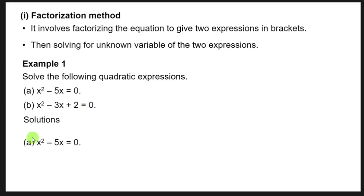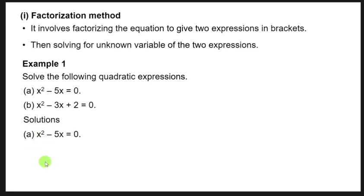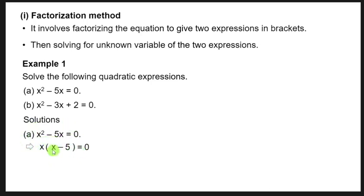We'll begin with A: x² - 5x = 0. Looking at the terms on the left side of the equal sign, they have a common term which is x. So x is common between these two terms. Therefore, x is going to be factored out. We'll have x(x - 5) = 0. At this point, we have come up with two factors — one inside the brackets and one outside.